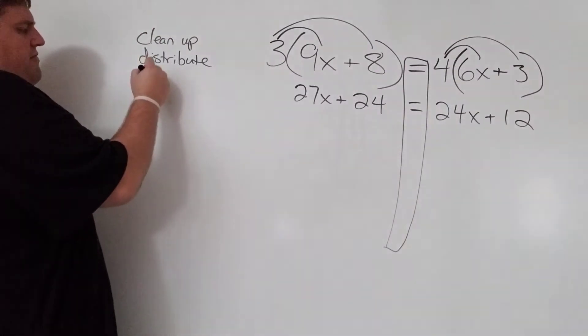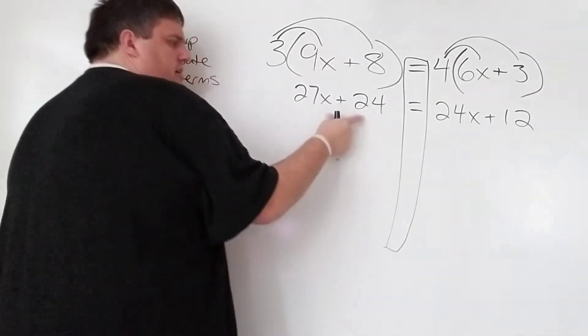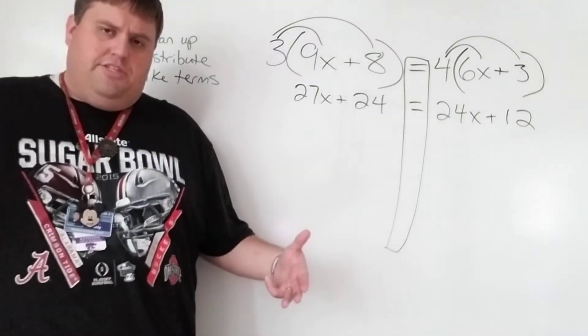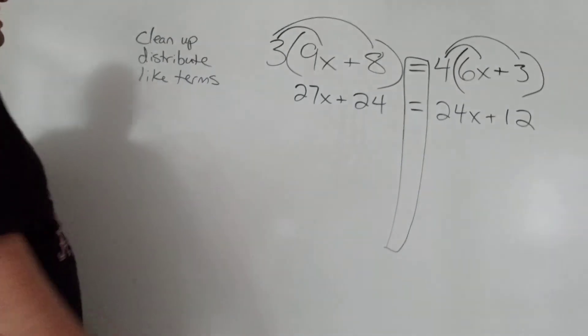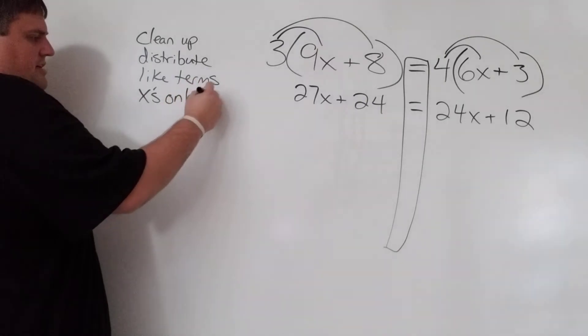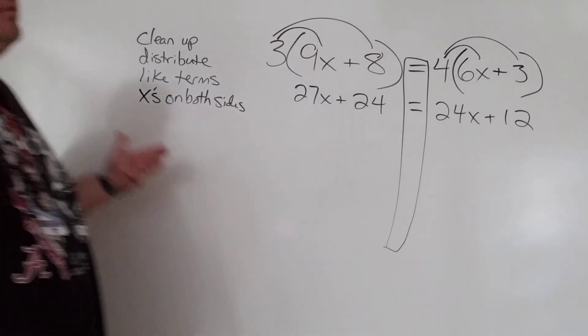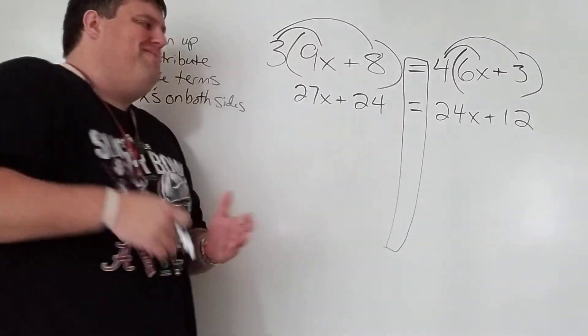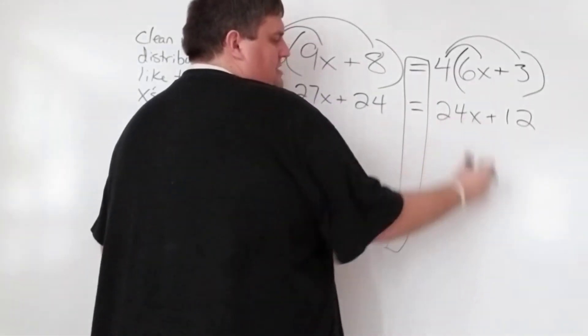After I distribute, I'm going to check for like terms. These are not like terms. These are not like terms. There's nothing that I can combine on this one. Now, wait till the next one, because we're going to combine some like terms. Then I check, are there x's on both sides? Definitely there are. I have 27x over here. I have 24x on that side. So I'm going to have to get rid of an x.